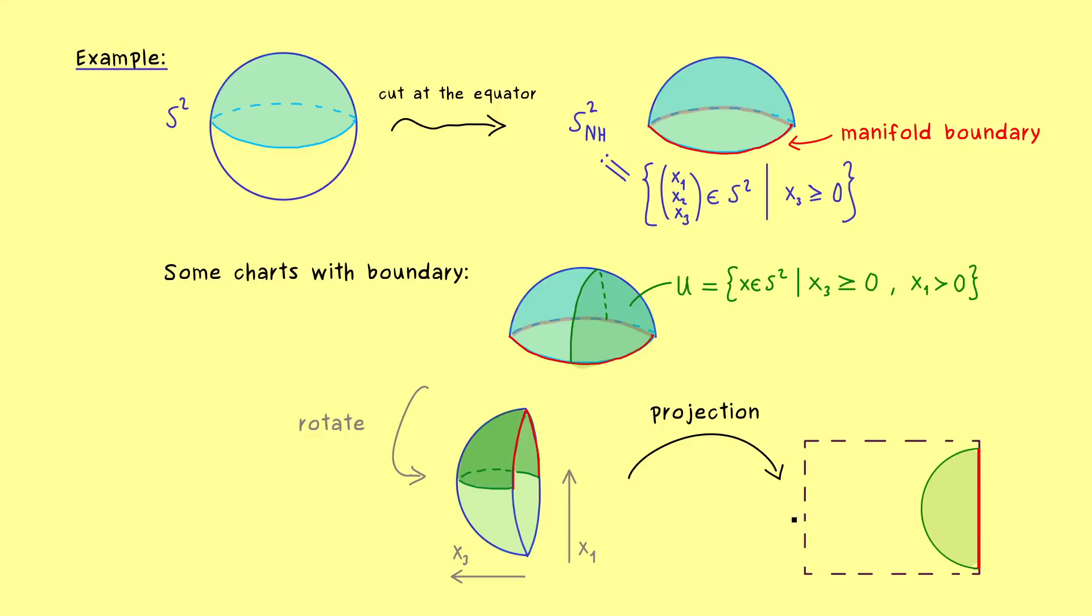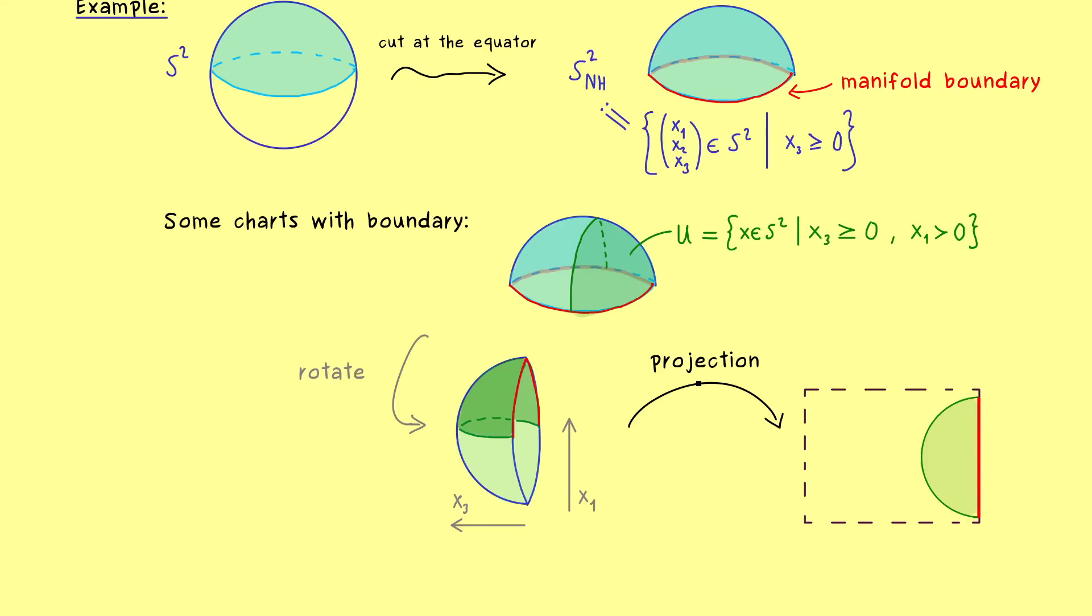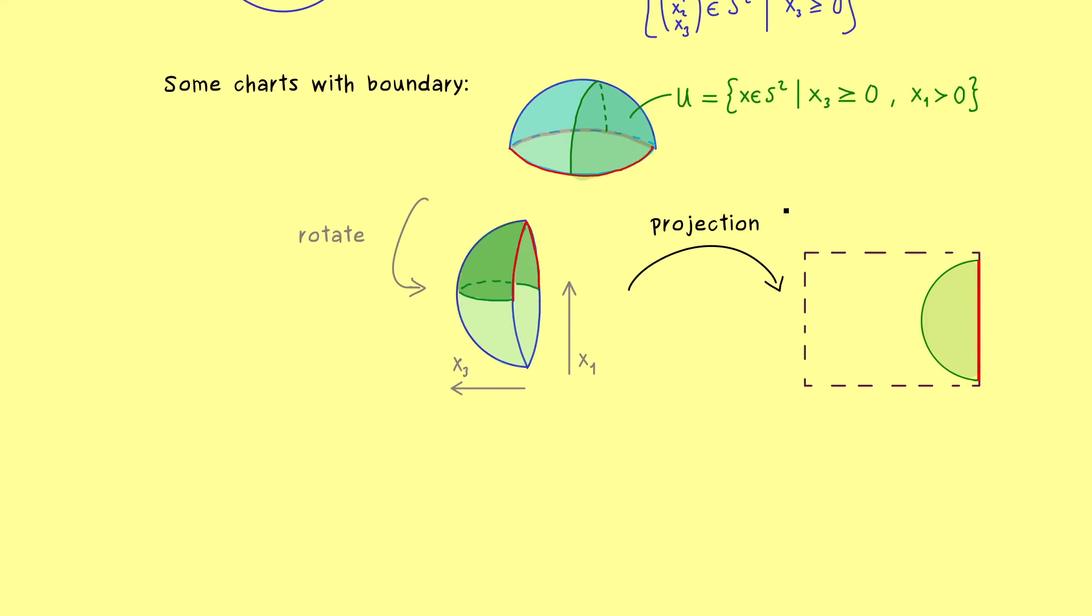This makes sense for our homeomorphism, because we have an open set in our abstract topological space on the left-hand side, and an open set in our subspace topology on the right-hand side. Hence, we don't have any problem at all to write down the explicit chart.